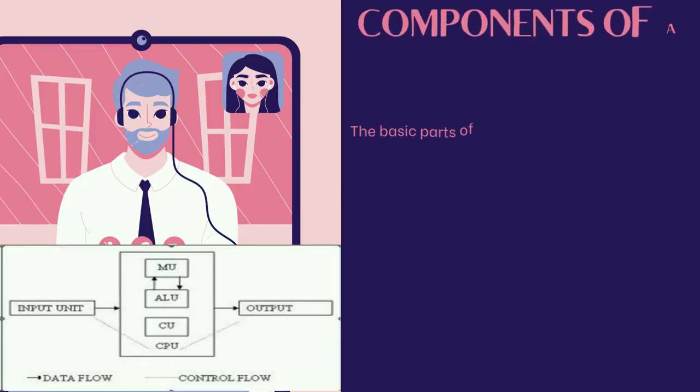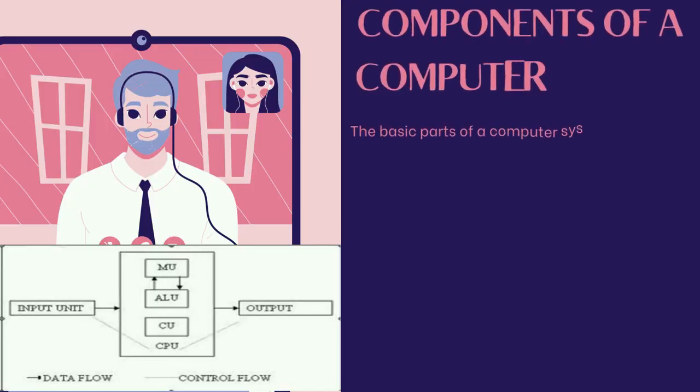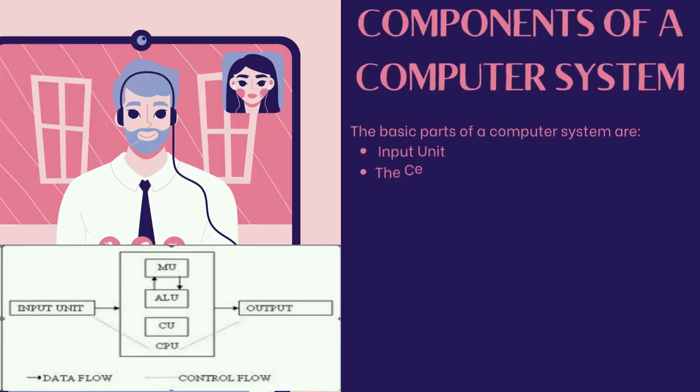Components of a computer system. The basic parts of a computer system are: the Input unit, the Central Processing unit, and the Output unit.